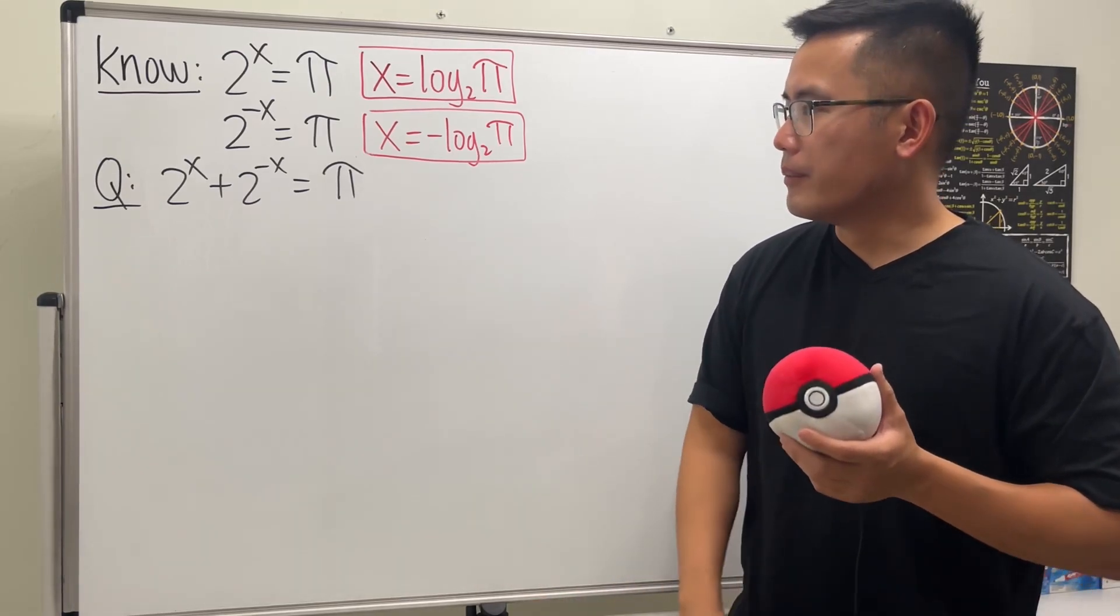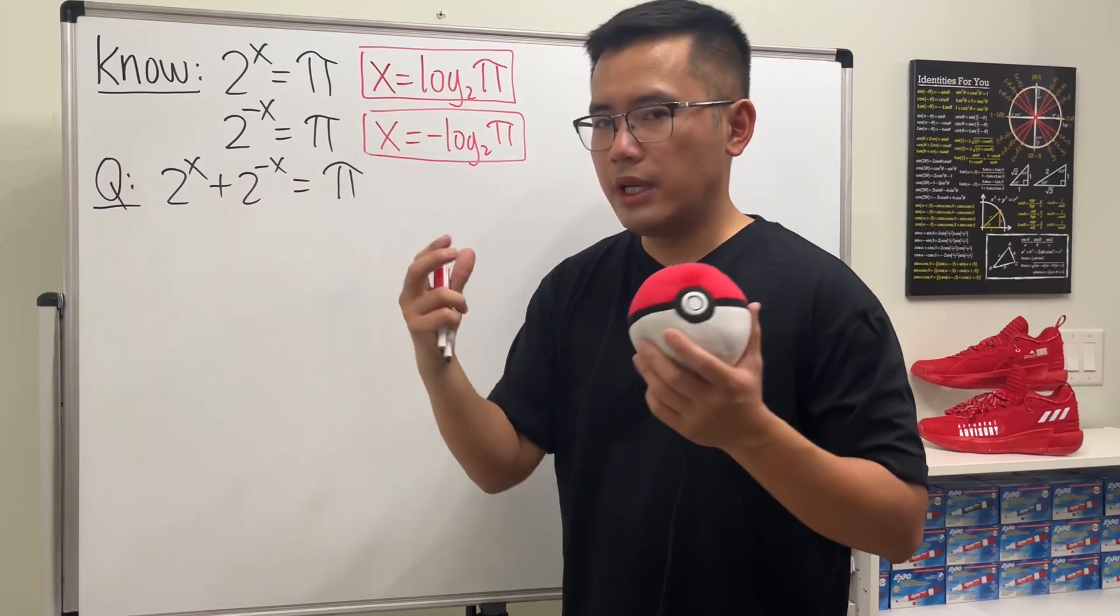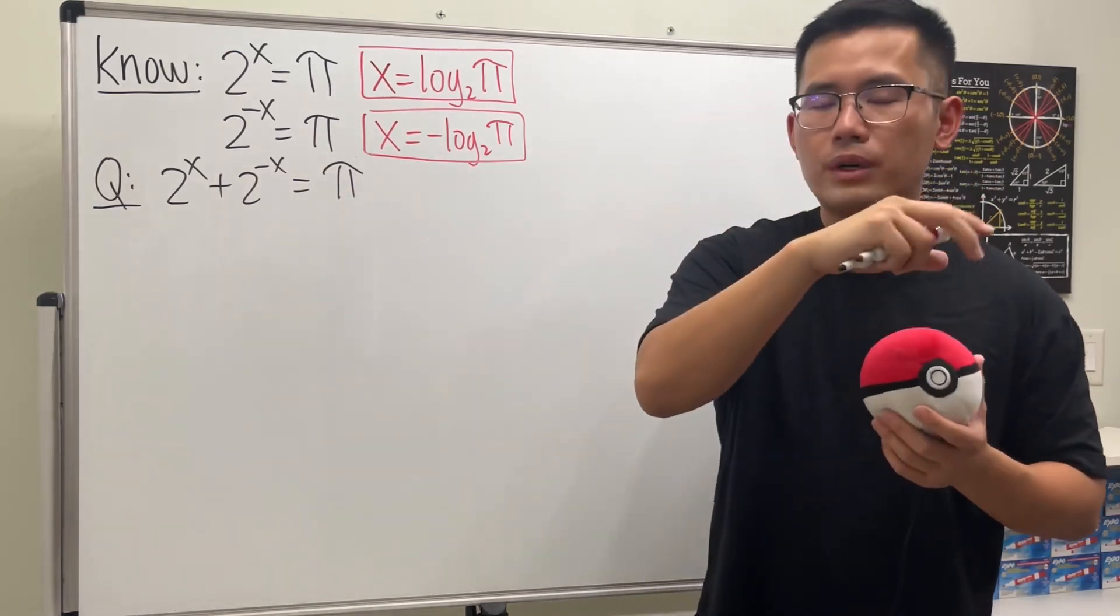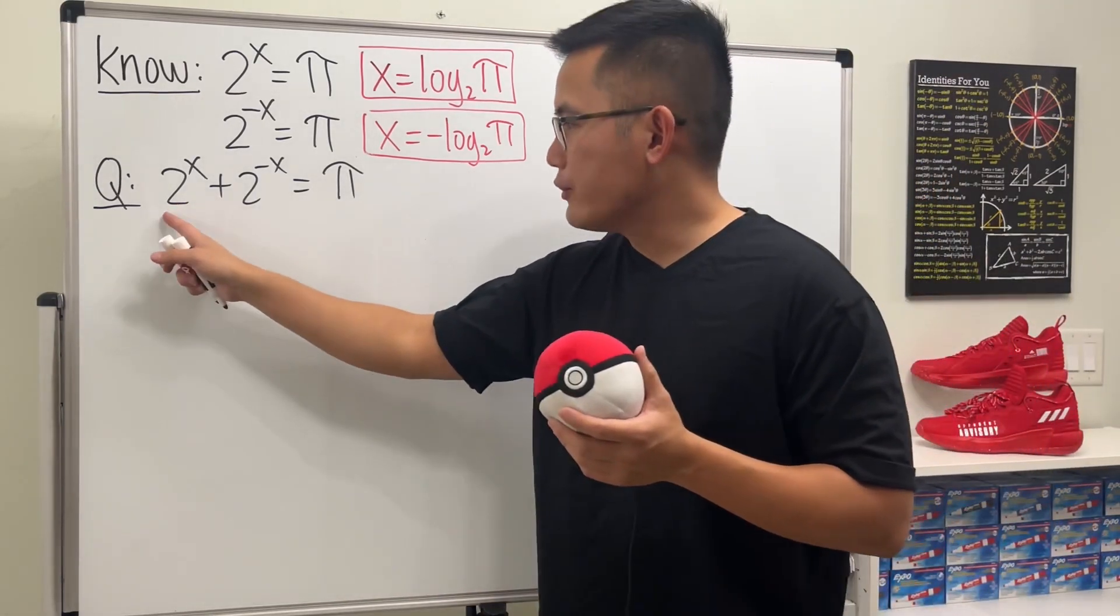Done? Okay, here we go. As we can see, we cannot just take log right away because we can only have something to the x power and take log to cancel the base. Here we have two exponential parts.